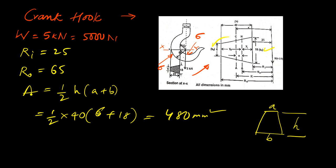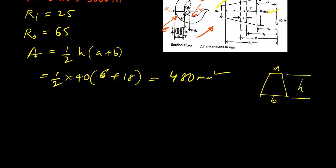For this problem, it is a hook where the load is applied at a distance x — it means this is a case of stresses in eccentric loading. In this type of case, we will generally have two types of stresses induced in the object: one is the direct stress, and another is the bending stress.